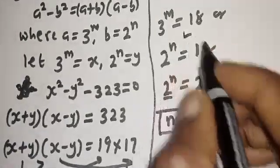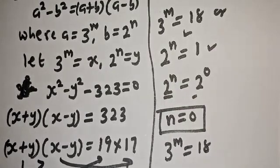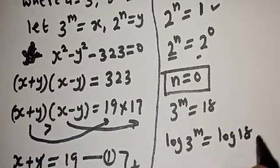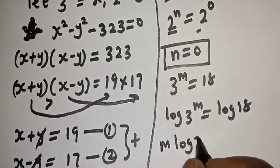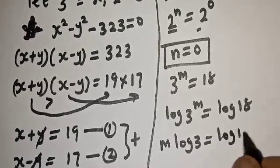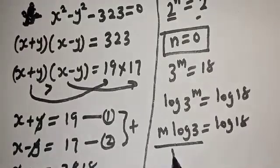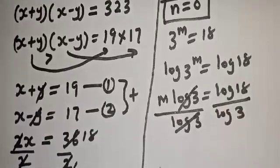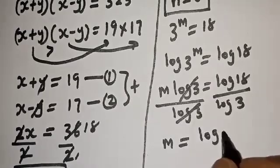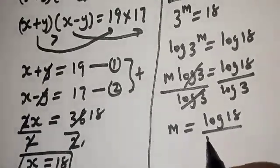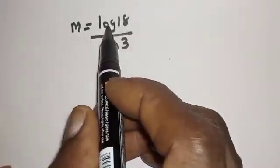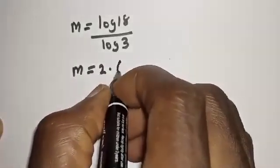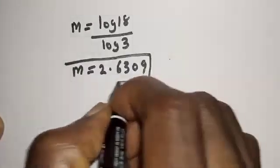Also, from 3 raised to power m equal to 18, let's take the log of both sides. Log 3 raised to power m equals log 18. Then m times log 3 equals log 18. Dividing both sides by log 3, m equals log 18 divided by log 3. By pressing on the calculator, m is equal to approximately 2.609.